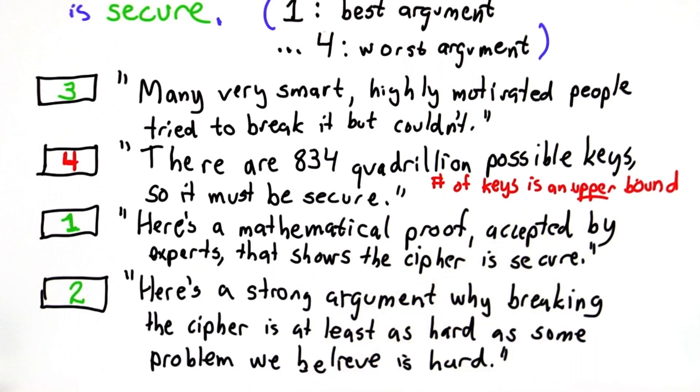But for ciphers where the key space is smaller than the message space, you could try keys and have a good likelihood if the key leads to a sensible message that that's the right message. So this gives you an upper bound on how hard it is to break a cipher. It doesn't give you a lower bound.